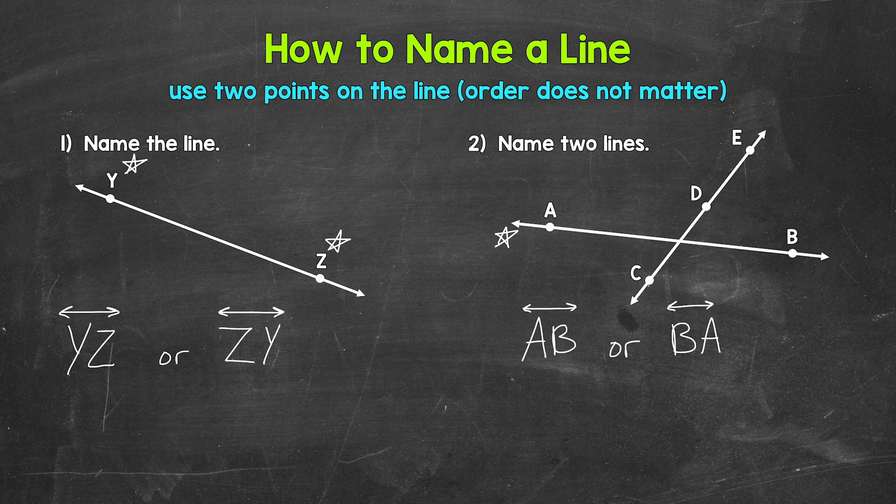Now for our second line, let's look right here at this line where we have point C, D, and E. Now we only need to use two points to name this line. So we can use whatever combination or order that we would like. We just need to use two points in order to name this line.